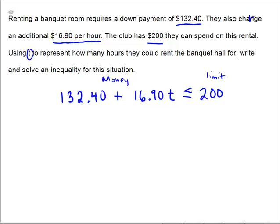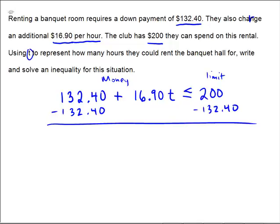I'll subtract $132.40 from both sides of the equation. So that way I get $16.90T is less than or equal to $200 minus $132.40. That's $67.60.